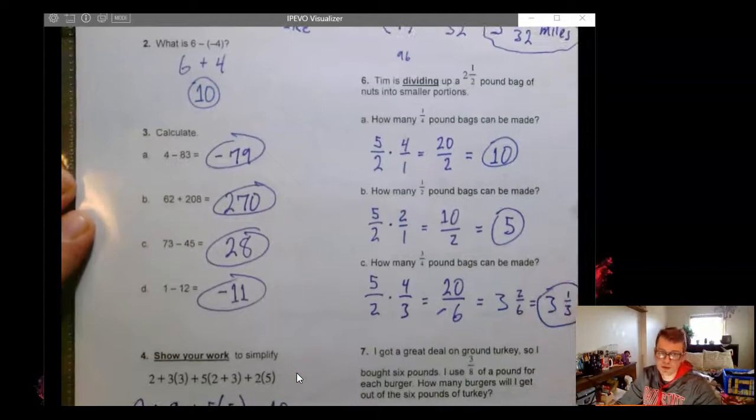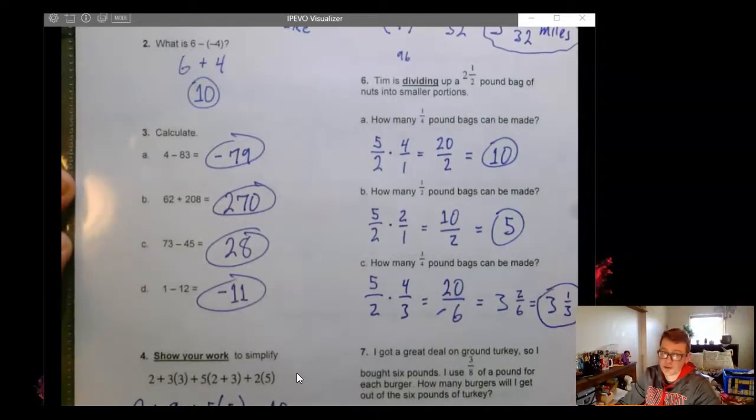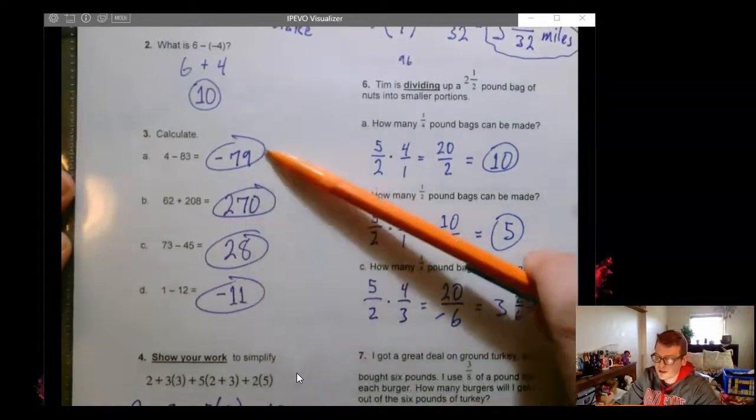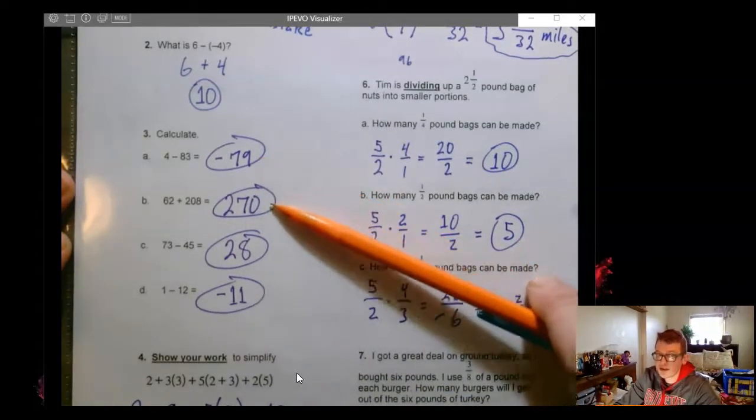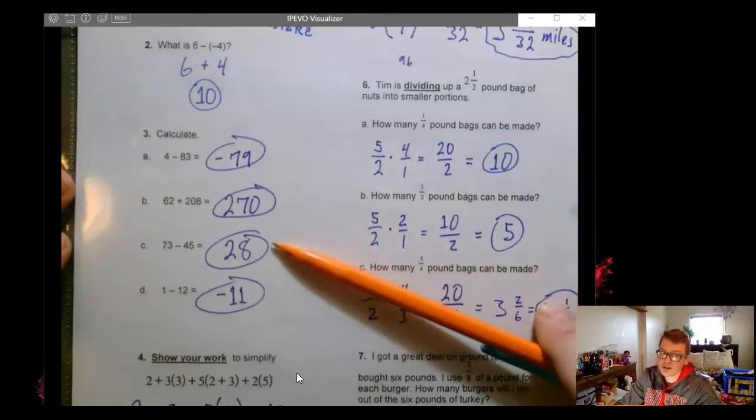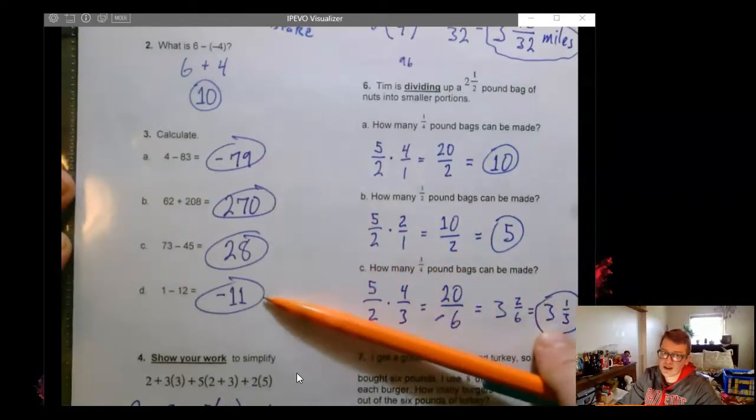Same sort of work in number 3. So again, I'm going to go kind of faster here on chapter 2 than I did chapter 1 because we've had more practice with this stuff. This comes out to be negative 79, 270, 28,